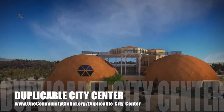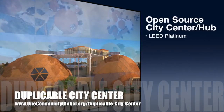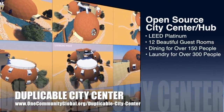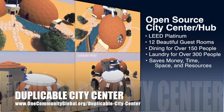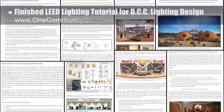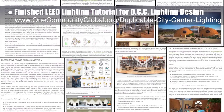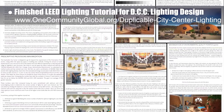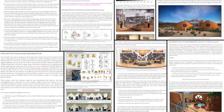One Community is also creating an open source duplicable city center, designed to be LEED Platinum certified, provide 12 guest rooms, dining for over 150 people, and laundry and recreation space for over 300 people — all while saving money, time, space, and resources. This week the core team finished the final 10% of the LEED lighting tutorial details for the lighting design of the city center and all other One Community structures, adding additional formatting, images, and finishing the case study section explaining how we're applying all the LEED suggestions.